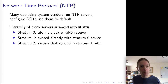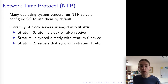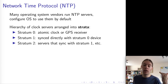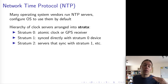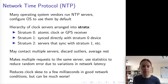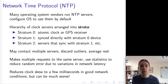NTP servers are arranged into what are called strata. Stratum 0 is just the accurate time sources — atomic clocks or GPS receivers. Stratum 1 is a server connected directly to a stratum 0 time source. Stratum 2 is a server that gets its time from a stratum 1 server. A stratum 3 server gets its clock from a stratum 2 server, and so on. There are a whole bunch of statistical techniques used to improve the quality of time estimates.